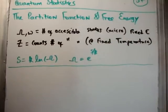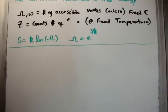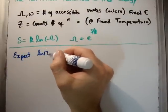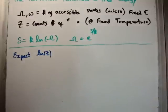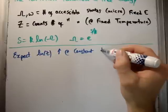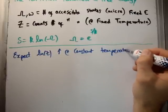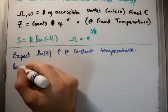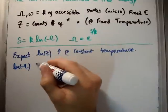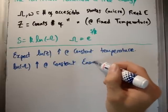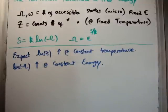Where does this come from? We expect that the natural logarithm of the partition function increases at constant temperature. That's pretty straightforward — we expect that. Just as we expect that the natural logarithm of the multiplicity of states tends to increase at constant energy. So, do we have such a quantity?